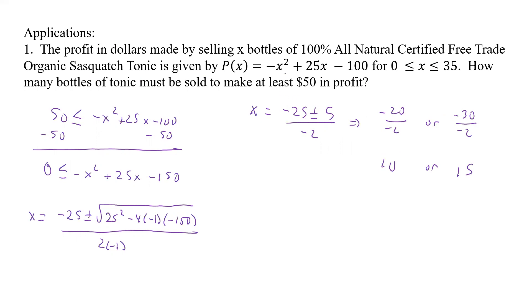So basically, it looks like if you think about a quadratic, it's going to be something like this. And so somewhere is going to be that at least $50 profit. So that's our $50 profit. So as long as we're between that 10 and 15, we should be above $50. And so I'm going to say we're going to sell between 10 and 15 bottles of the Sasquatch tonic.